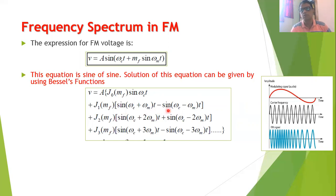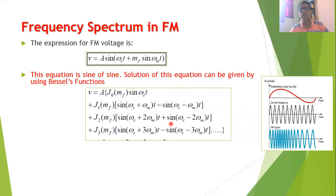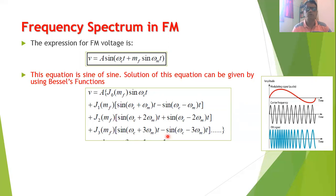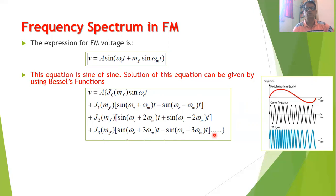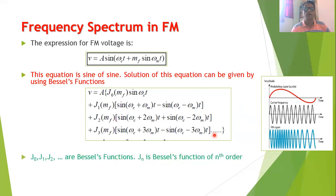Continuing the expansion: + J2(MF)·( sin((ωC + 2ωM)t) + sin((ωC − 2ωM)t) ) + J3(MF)·( sin((ωC + 3ωM)t) − sin((ωC − 3ωM)t) ) + ... and so on. We can write infinitely many such terms when expanding using Bessel's function.